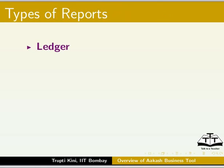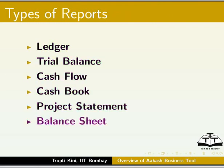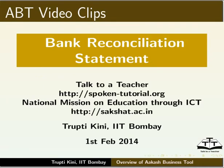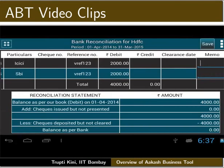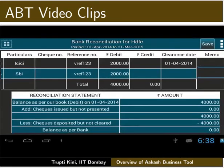We can view various types of reports in ABT such as ledger, trial balance, cash flow, cash book, project statement, balance sheet, and profit and loss account. Let us have a look at bank reconciliation. Tap on the clearance date field to enter the clearance date of the voucher. We can give memo as a statement while clearing a transaction. Let us give memo as cleared. Total debit and total credit amounts are present at the end of the table.